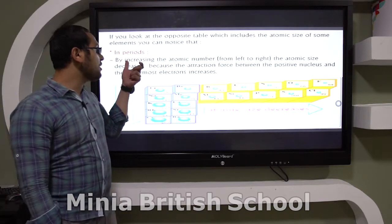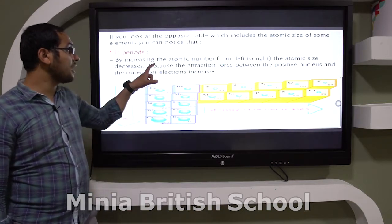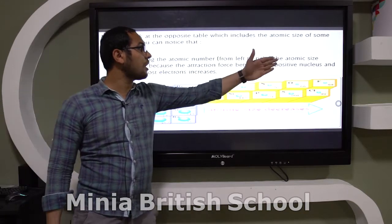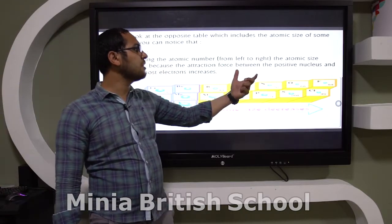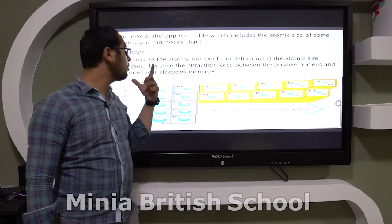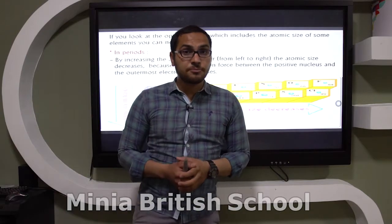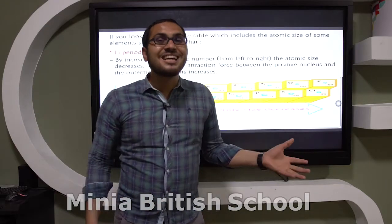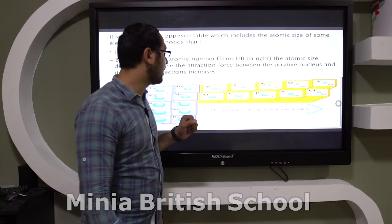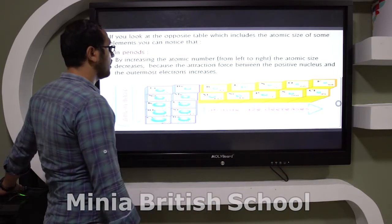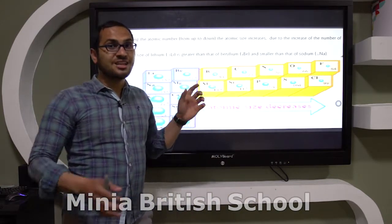So in periods, by increasing the atomic number from left to right, the atomic size decreases because the attraction force between the positive nucleus and the outermost electrons increases. That means the atomic size is inversely proportional to the atomic number.